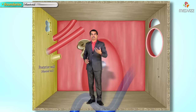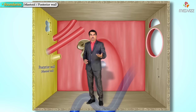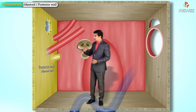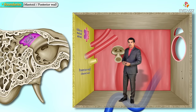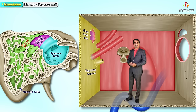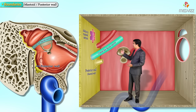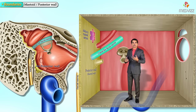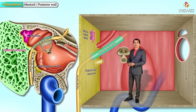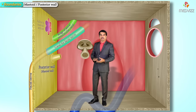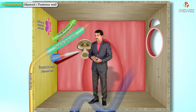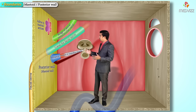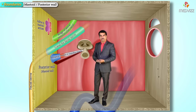The posterior wall, also called the mastoid wall, features the aditus — the opening to the mastoid antrum in its superior part — which connects the tympanic cavity to the mastoid air cells. The canal of the facial nerve descends between the posterior wall and the antrum, medial to the aditus. Above this canal is the lateral semicircular canal, and below the aditus is a hollow conical projection called the pyramid, perforated by the tendon of the stapedius muscle.